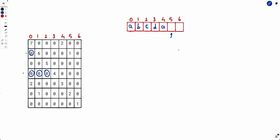For position 5: LCP(5,0) is 0, so not 'a'. LCP(5,1) is 1, which is greater than 0, meaning the substring starting at 5 and substring starting at 1 share a common prefix — so their first characters are equal. Since position 1 is 'b', position 5 is 'b'. For position 6: LCP(6,0), LCP(6,1), LCP(6,2) are all 0, so it's not equal to any previous character. It will be a new character 'e'.